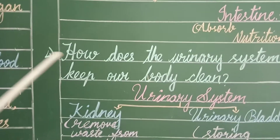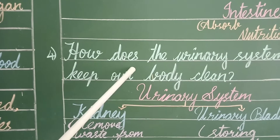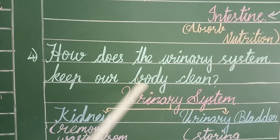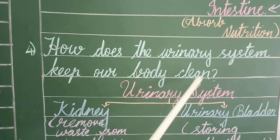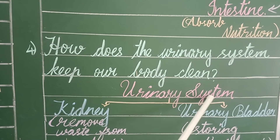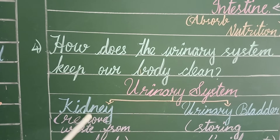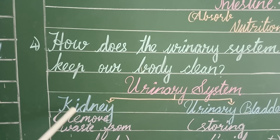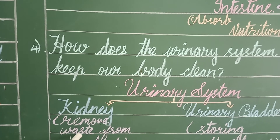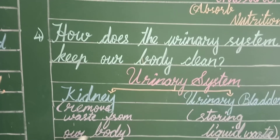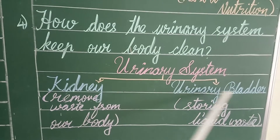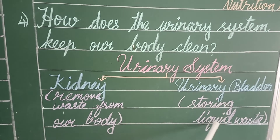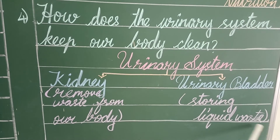Fourth question: How does the urinary system keep our body clean? The urinary system consists of the kidney and the urinary bladder. The kidney removes waste from our body, and the urinary bladder stores liquid waste.